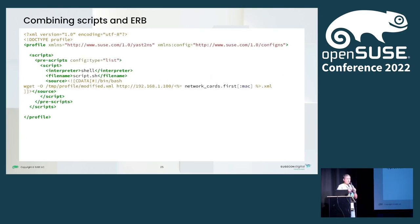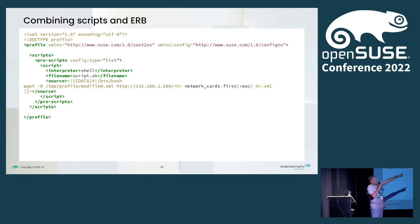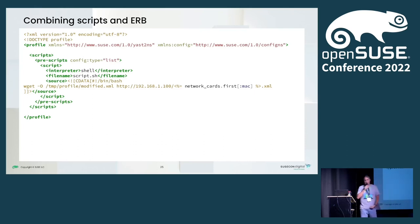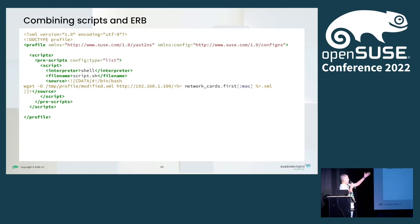You can also merge or combine ERB and pre-scripts. You cannot combine ERB and rules, but scripts, pre-scripts, and ERB can be combined — for instance, you can include the first MAC address in the script that way.